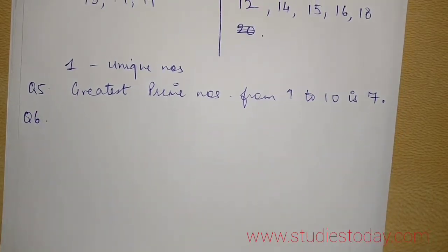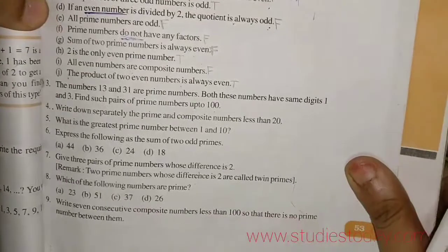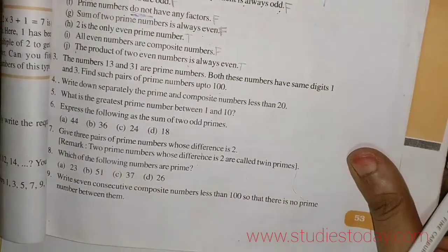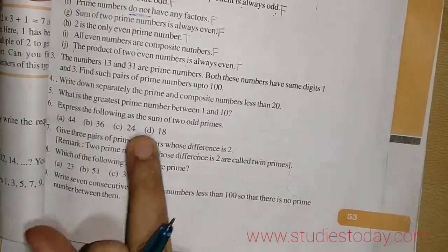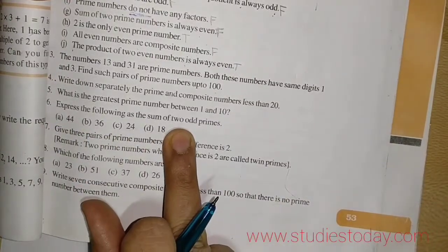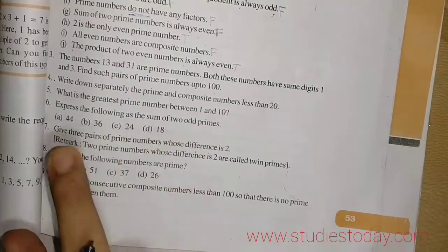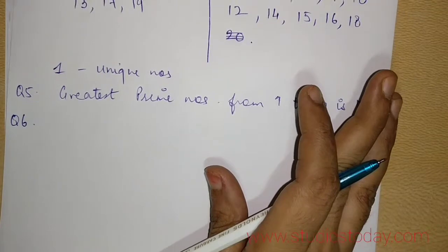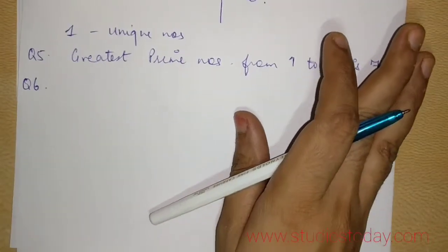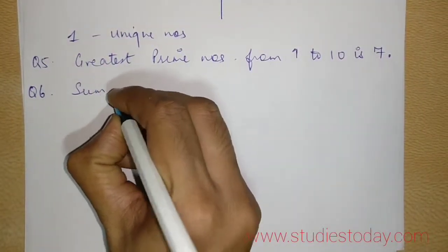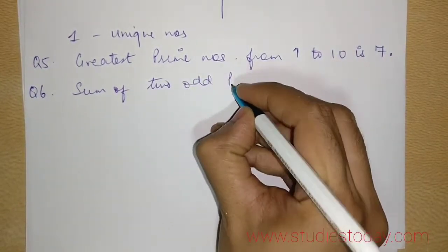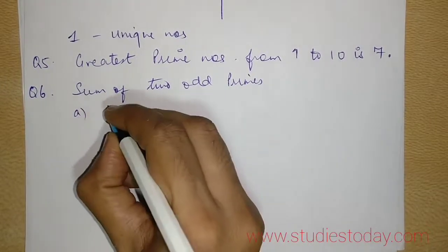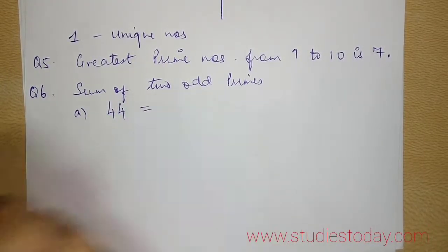Now we move on to the next question. Question number 6, which is very, very important for the point of view of the examination, which says express the following as the sum of 2 odd primes. We take up the first example, 44.